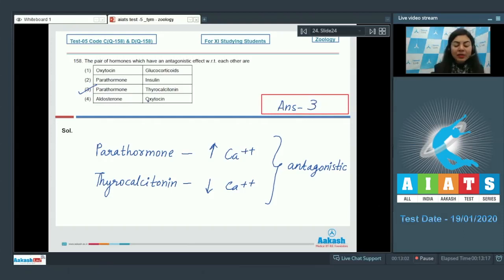And lastly, aldosterone and oxytocin, their functions are different and they are not antagonistic in nature. Right answer is three.